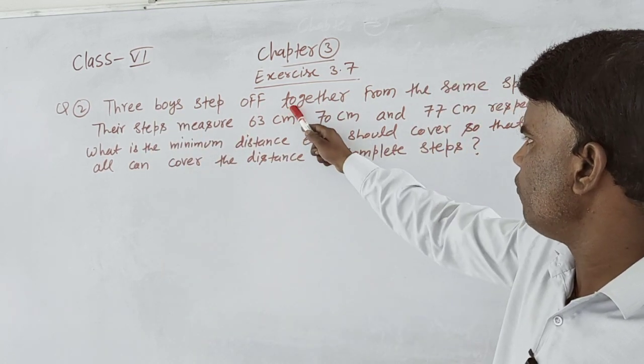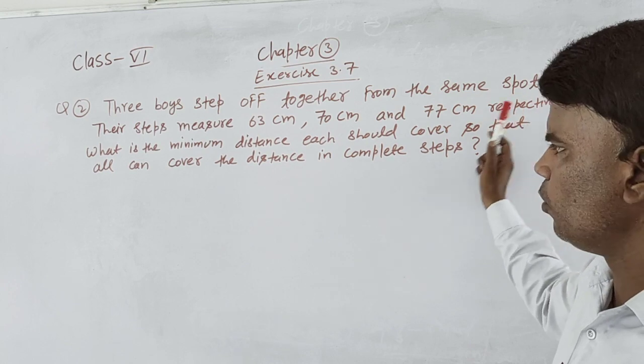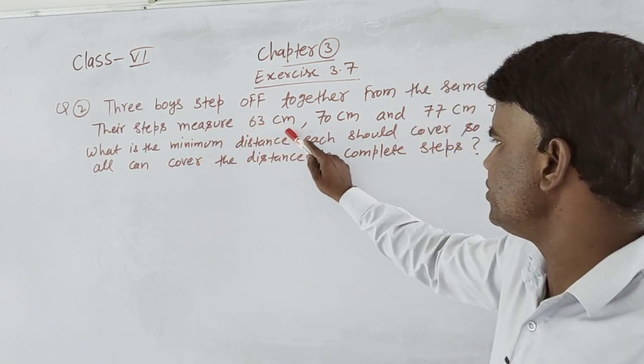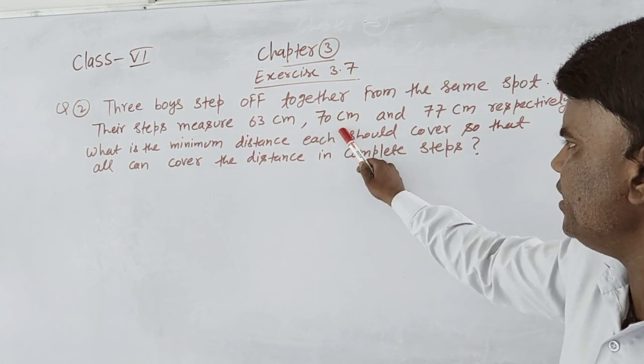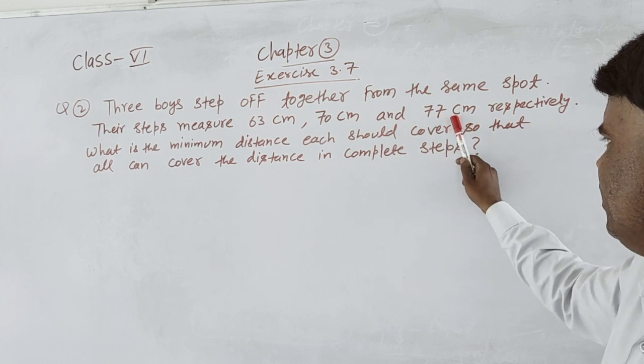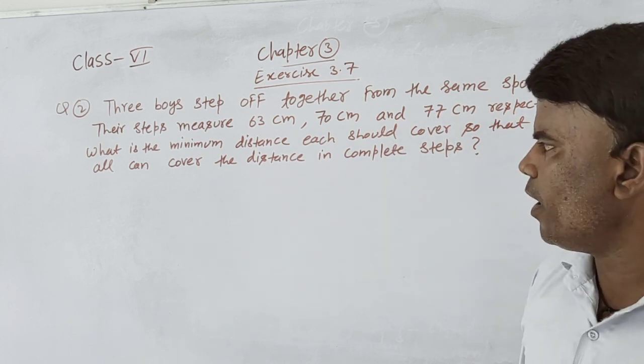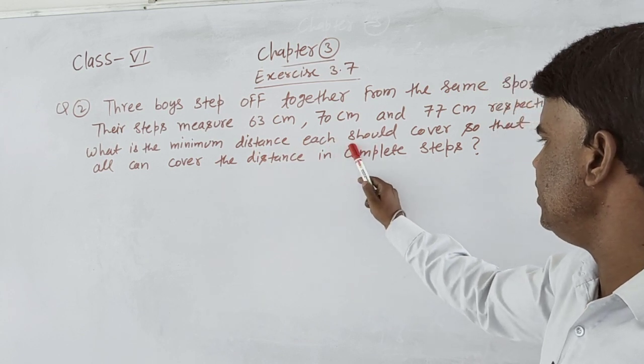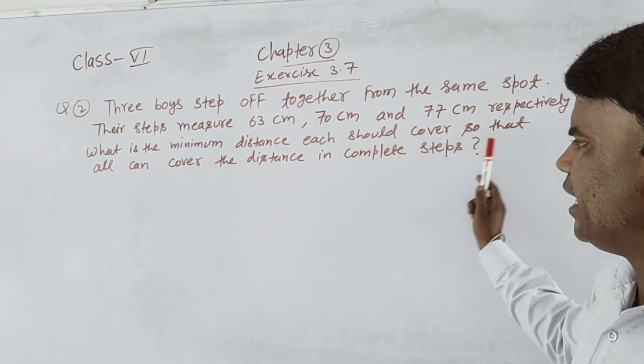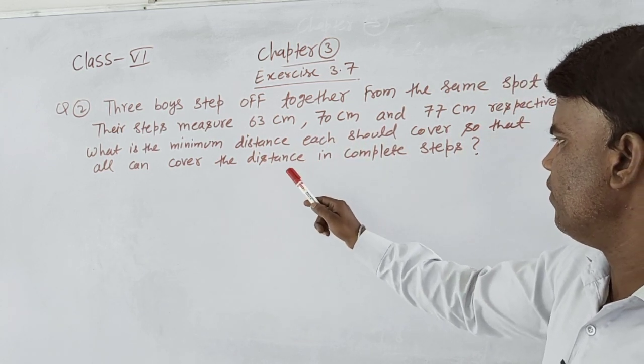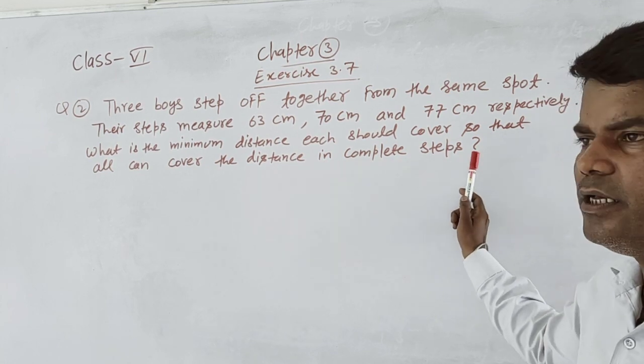Three boys step off together from the same spot. Their steps measure 63 cm, 70 cm, and 77 cm respectively. What is the minimum distance each should cover so that all can cover the distance in complete steps?